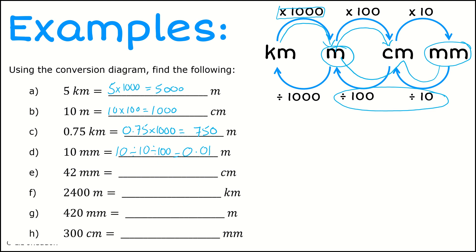Part E, we want to go from millimeters to centimeters. Divided by 10, so 42 divided by 10 is going to give me 4.2 centimeters.